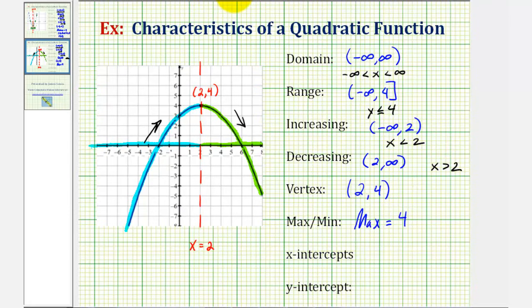And now for the last part, we want to find the x and y intercepts of the graph. The x intercepts are where the graph crosses the x axis. Notice how it crosses the x axis here and here. So the x intercepts are negative two, zero and six, zero.